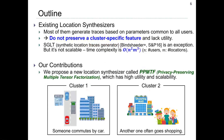However, most existing location synthesizers do not preserve cluster-specific features because they generate traces based on parameters common to all users, so they are not satisfactory in terms of utility. One exception is SGLT, the Synthetic Location Traces Generator, which is a state-of-the-art location synthesizer, but it is not scalable because the running time is quadratic in N, the number of users, and cubic in M, the number of locations. So in this work, we propose a new location synthesizer called PPMTF to achieve high utility and scalability.